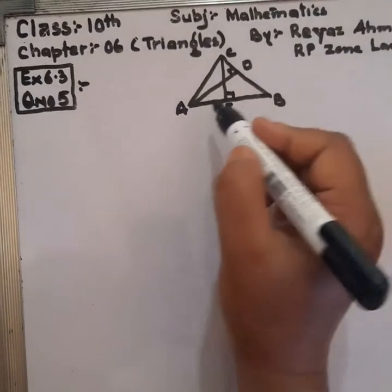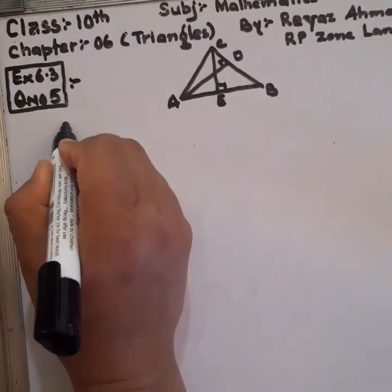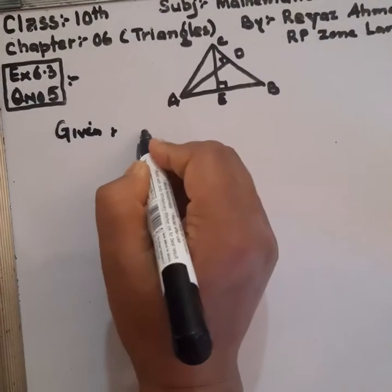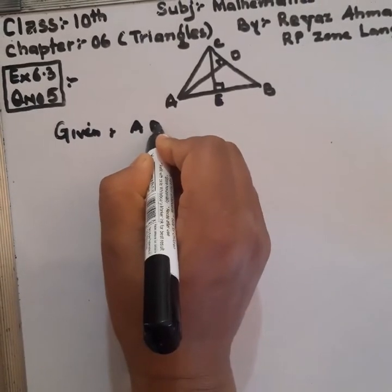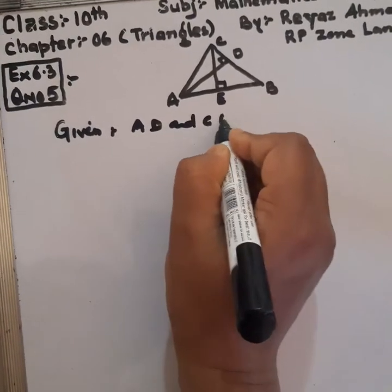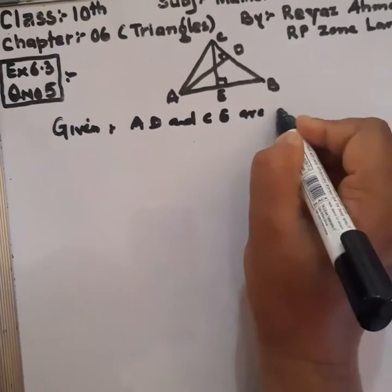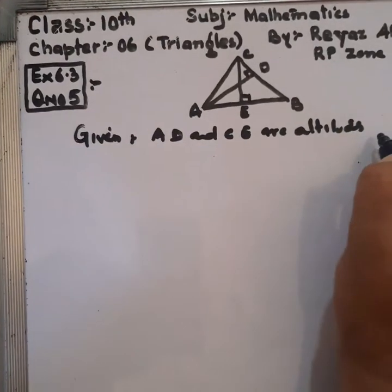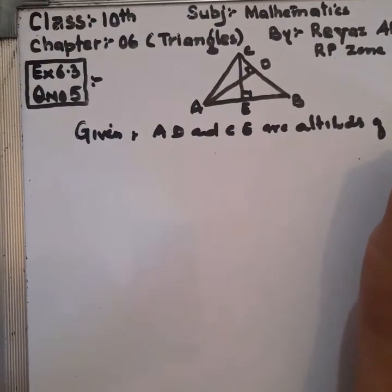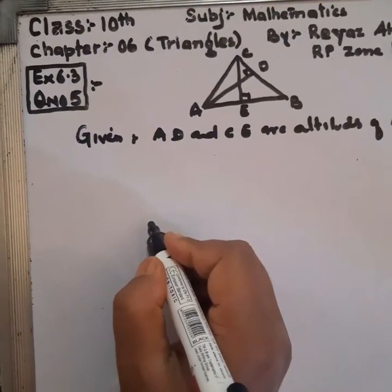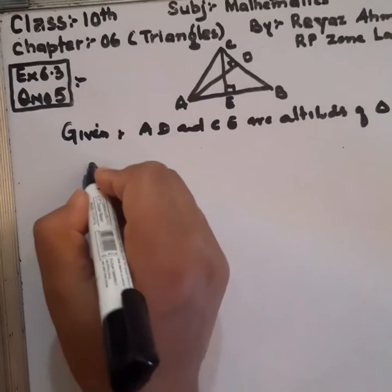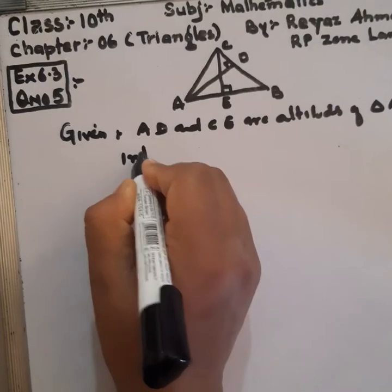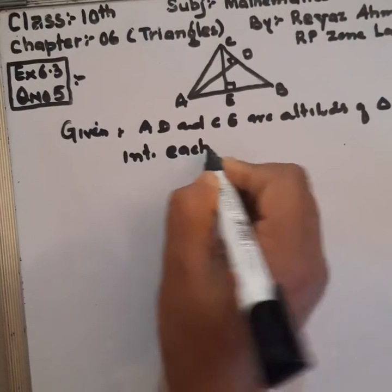Here in this figure, AD and CE are given. AD and CE are altitudes of triangle ABC. These altitudes intersect each other at P.